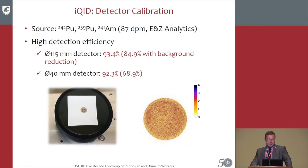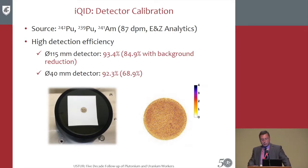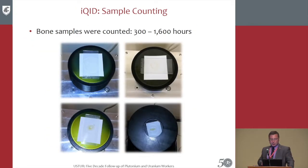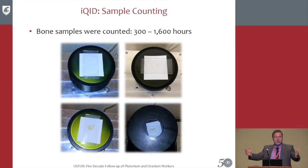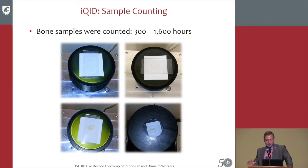Detection efficiency reduced somewhat when background filtering was applied — a post-processing step where background is removed — but it's still pretty good numbers. Samples were counted between 300 to 1,600 hours. 300 hours is somewhat low, but on average counting was about 1,000 hours.